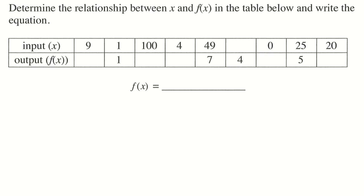There's another table here. It says: determine the relationship between x and y in the table and write the equation. Looking at the input numbers — 9, 1, 100, 4, 49, 0, 25, and 20 — and we can see that 49 maps to 7, 25 maps to 5, and 1 maps to 1. I want you to pause the video right now, think about what function would produce this, fill in the table, and write down the function rule.